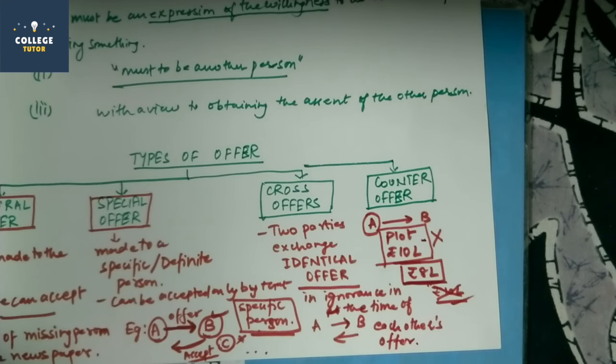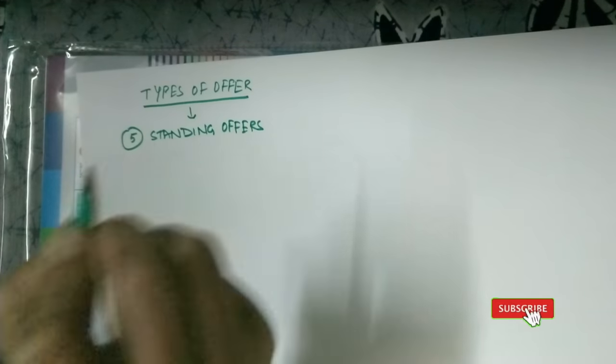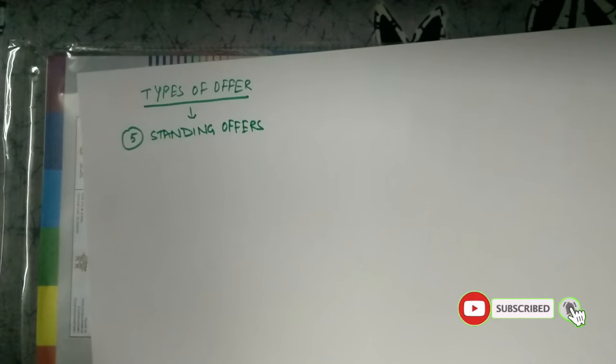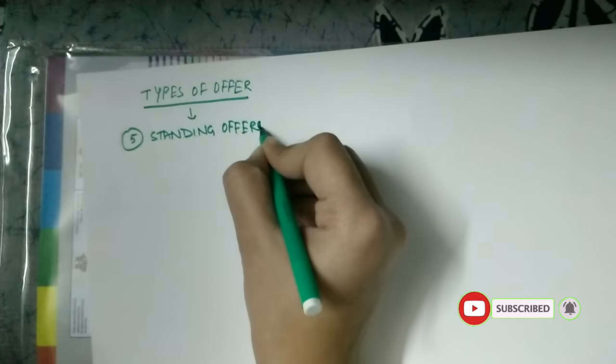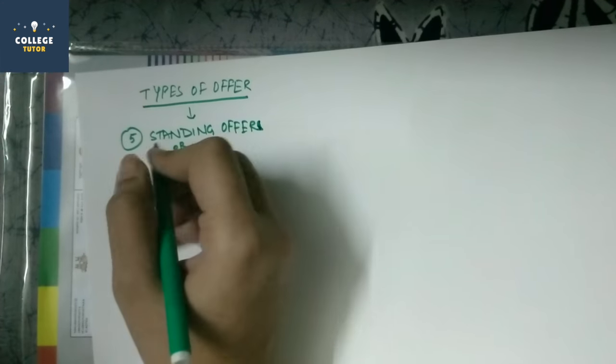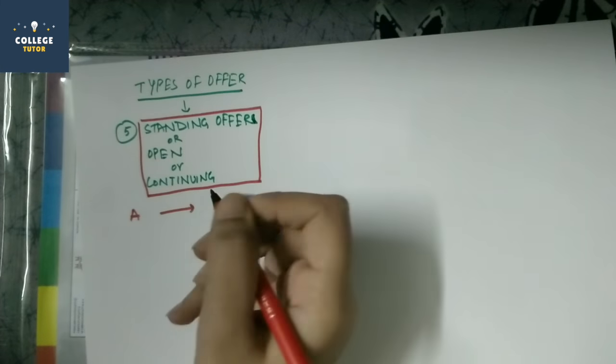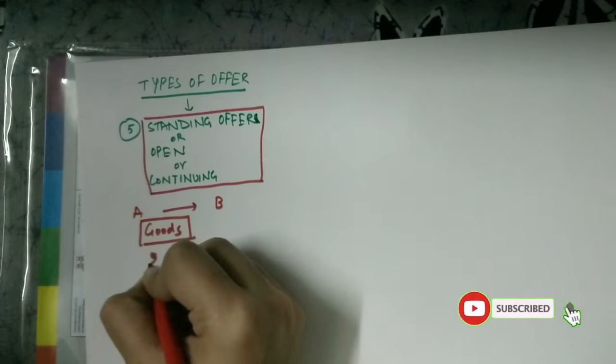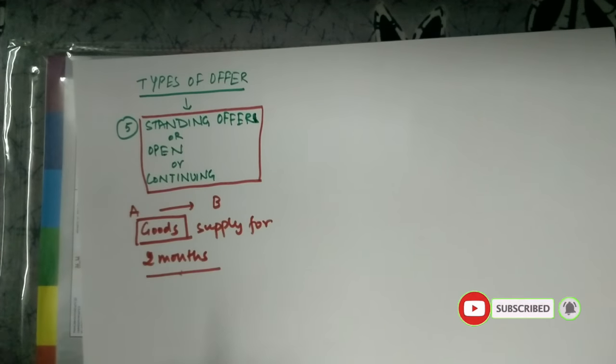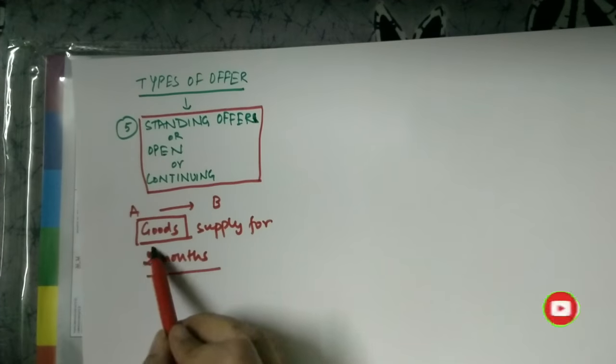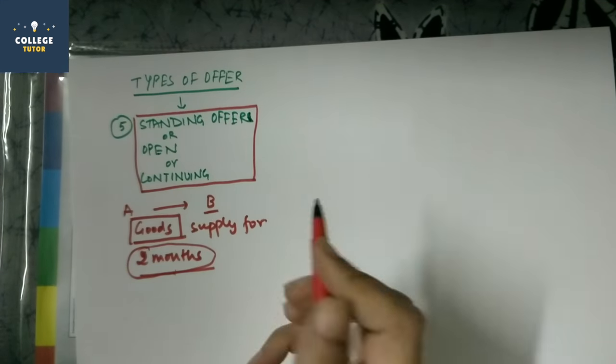Now the next type is standing offer. Now standing offer basically can be used with different names as well. Standing or we can say open or continuing. We can say it is a standing offer or open offer or continuing offer. Now an offer is allowed to remain open for acceptance over a period of time is known as standing, open, or continuing offer. Like A says to B that I will supply goods to you for 2 months. This offer will remain open or will continue for 2 months. This offer remains open for him for 2 months.